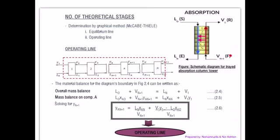Now, let's label the stream of the absorption column. The feed gas stream is labeled as V_n+1, the extract is labeled as L_n, the solvent is labeled as L_0, and the raffinate is labeled as V_1.